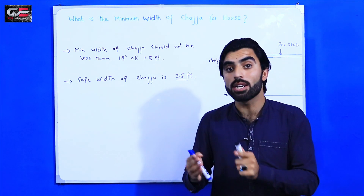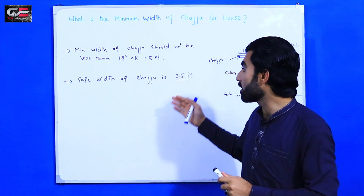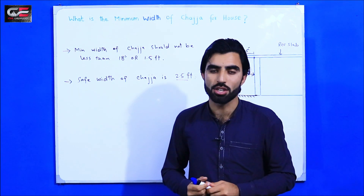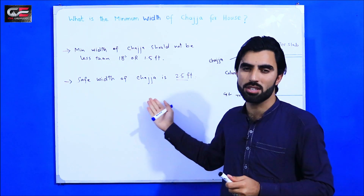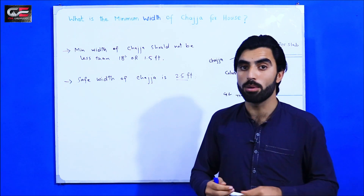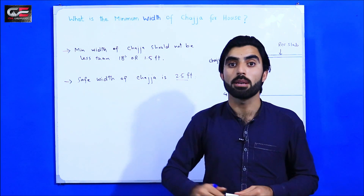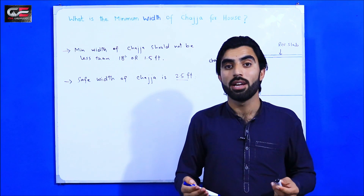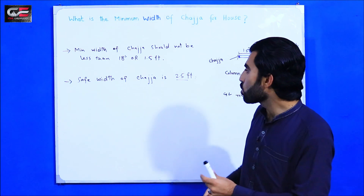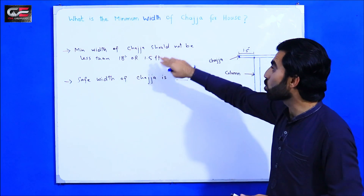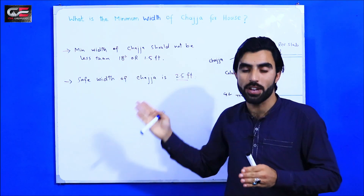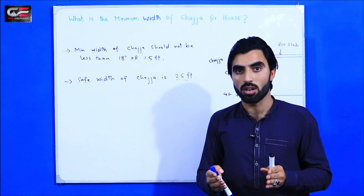If the chadja cracks, you will face more problems because you can't do repairs after completion of the work. So before facing problems, you should fix this before starting building construction — what should be the minimum and safe width of chadja, or what are the tips if you want to increase it. The minimum width should not be less than 18 inches or 1.5 feet, as rainy water can affect the building.